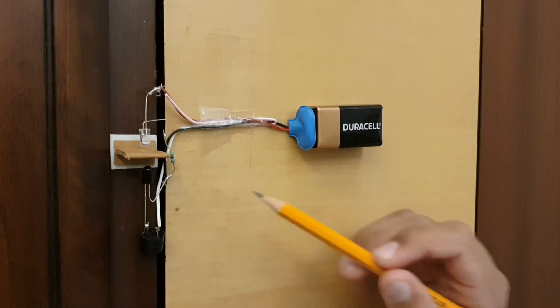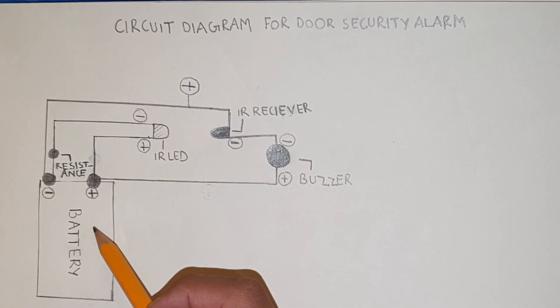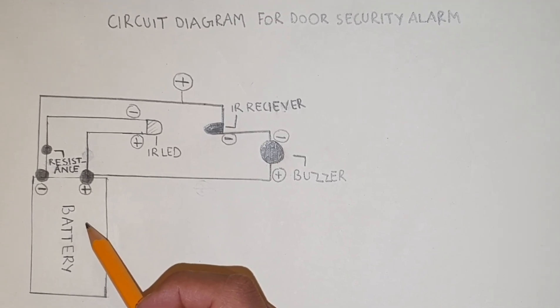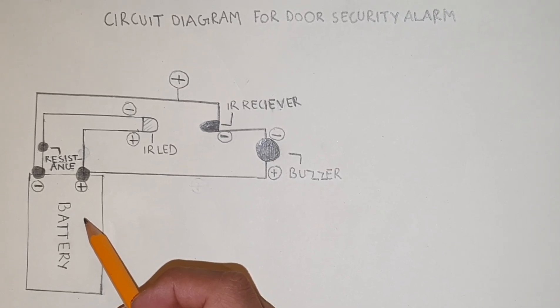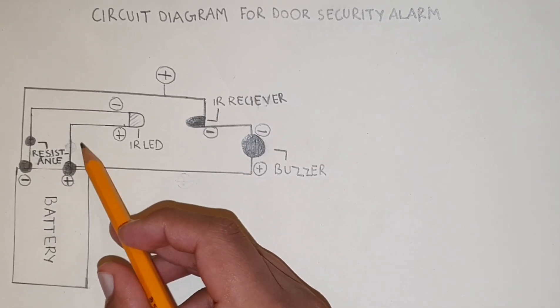So now I am going to explain the circuit diagram to you. It is easily available on the internet, but I have made a hand-drawn circuit diagram to explain to you. The positive of the battery is connected to the positive of the IR LED.